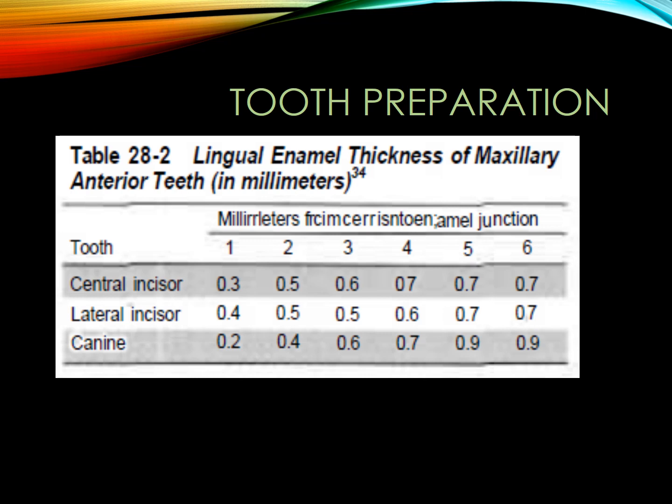With a slight extension on the facial surface to achieve the facial locking, our preparation should encompass at least 180 degrees of tooth structure to increase the resistance of the retainer. The retention will depend on the bonding of the metal to the tooth structure, so my preparation should extend as far as possible to achieve maximum bonding.